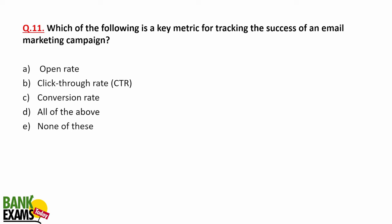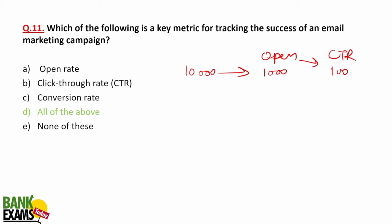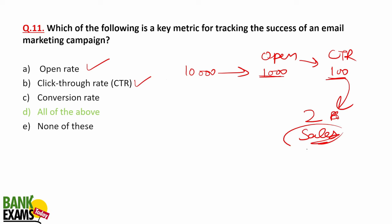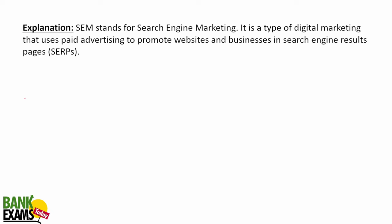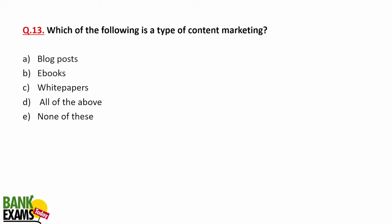Which is a key metric for tracking success of an email marketing campaign? Emails are properly tracked — we know how many people opened the email (open rate), how many clicked a link in the email (CTR / click-through rate), and how many actually purchased the goods or services (conversion rate). So all of the above is the correct answer. The full form of SEM is search engine marketing — social engine marketing is not a term, and SEO is search engine optimization. A blog post is a type of content marketing.